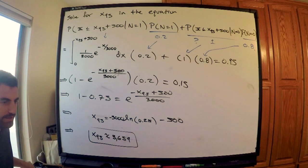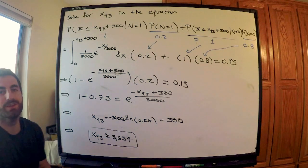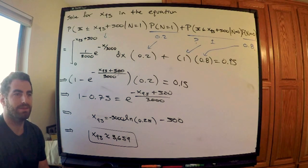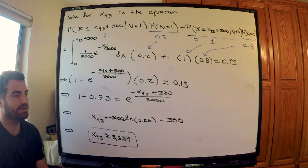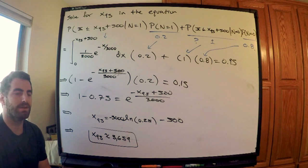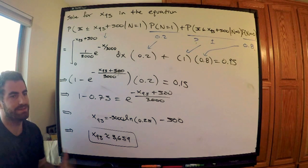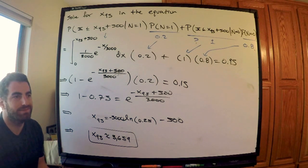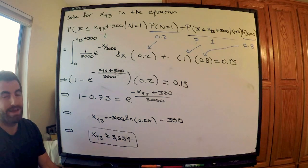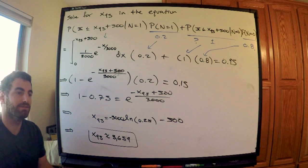I encourage you to look at the solution given on the SOA Society of Actuaries website for Exam P sample questions — I believe this is problem number 150. Compare it with my approach; we get the same answer. It's just a matter of preference in how you think through the math and convince yourself you're doing it correctly.